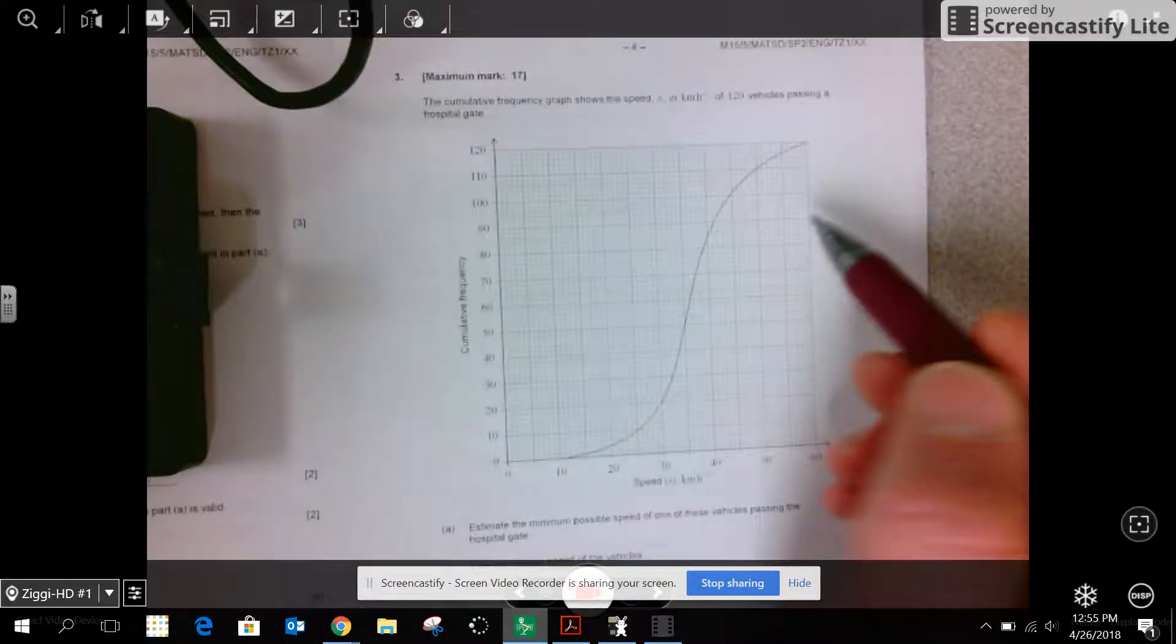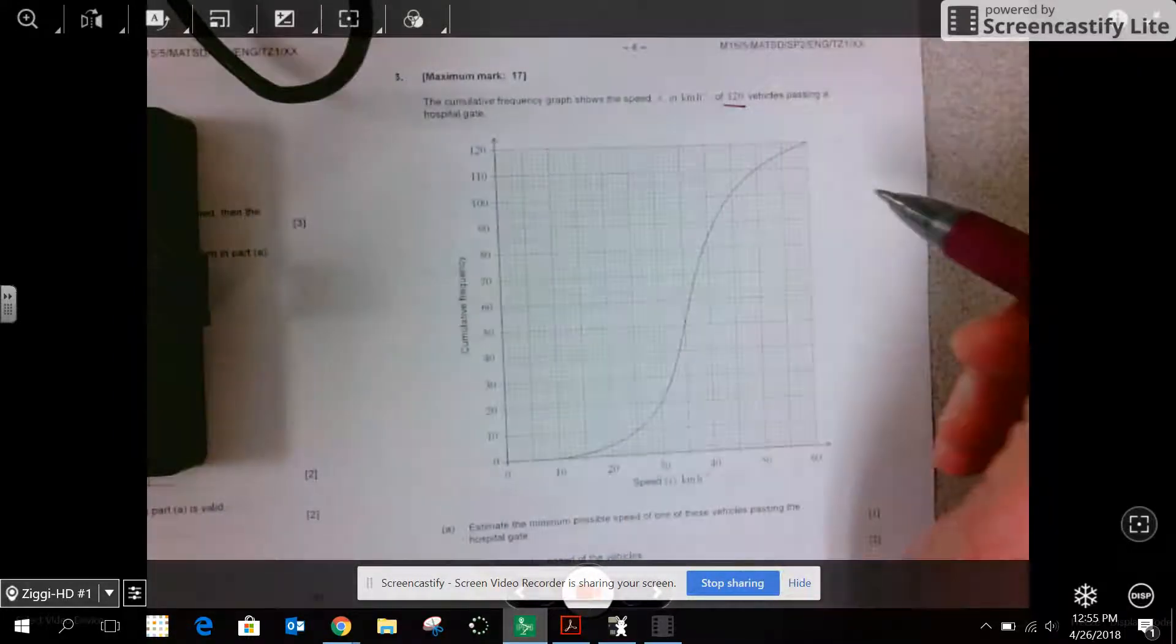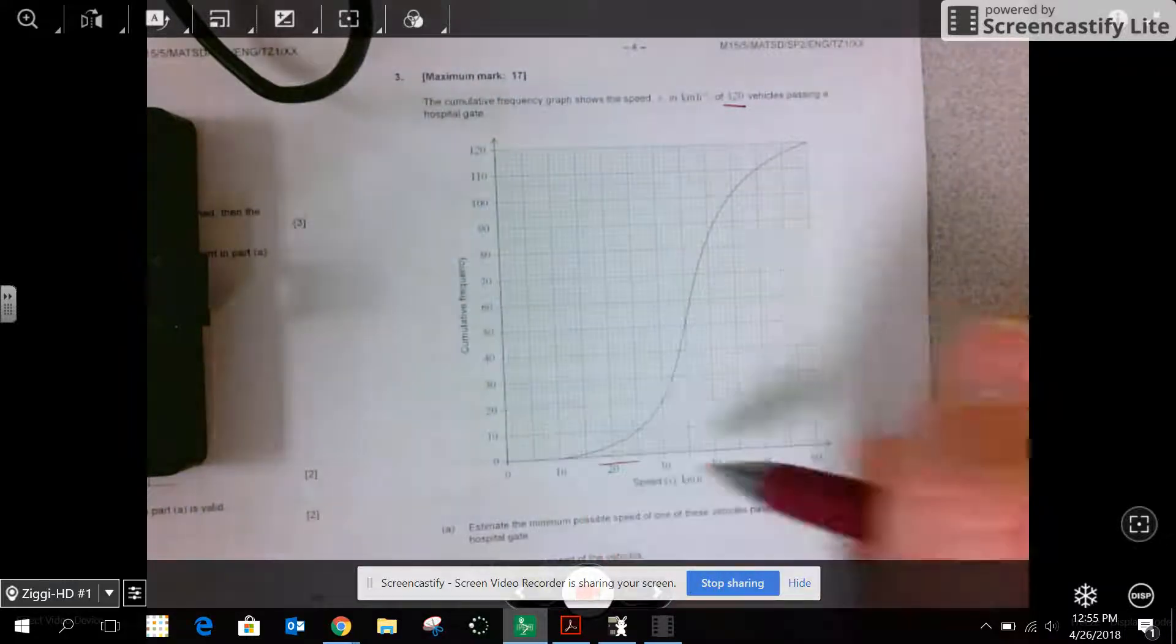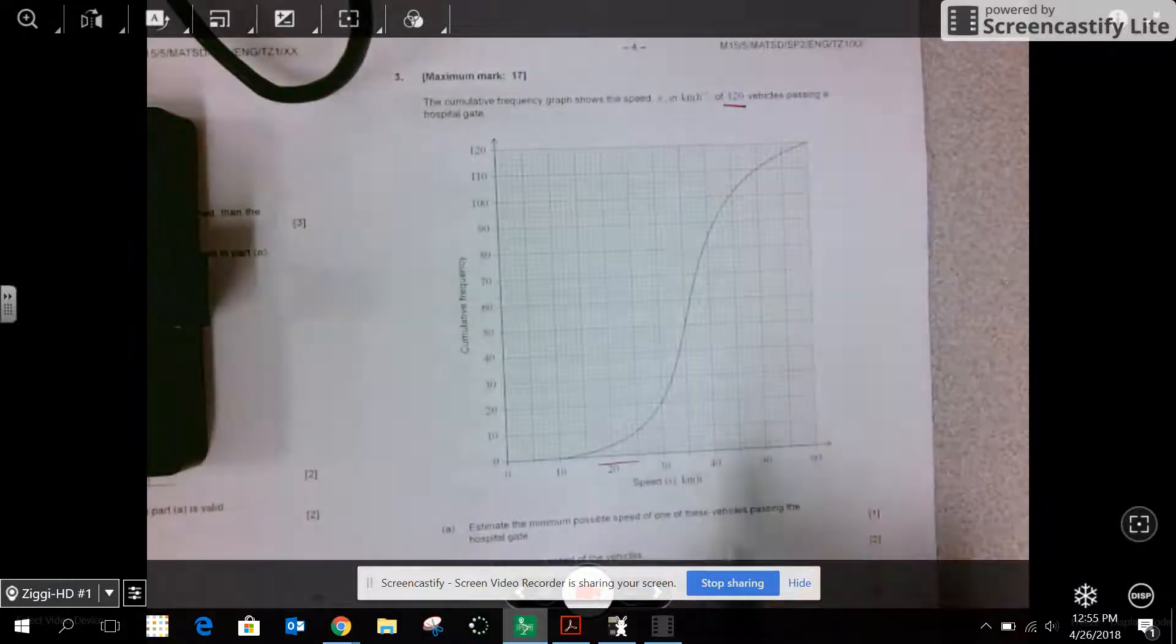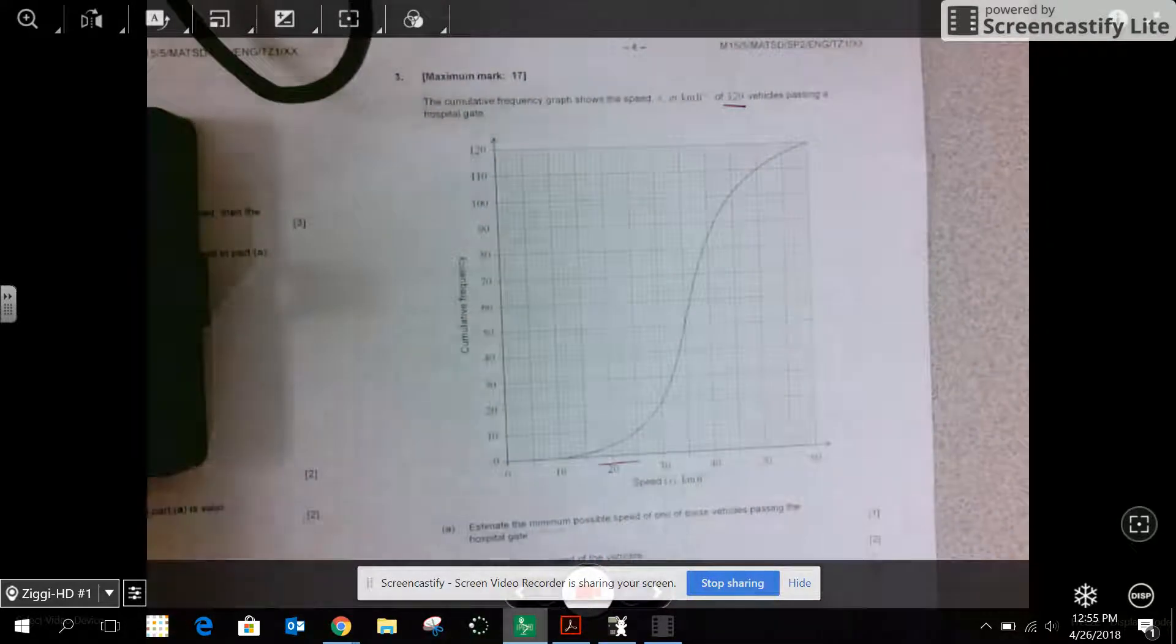There's a cumulative frequency graph. There's 120 vehicles and their speed limit is here and then the cumulative frequency goes across. Okay, so let's go through here.